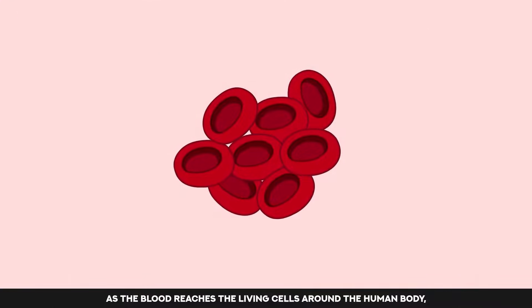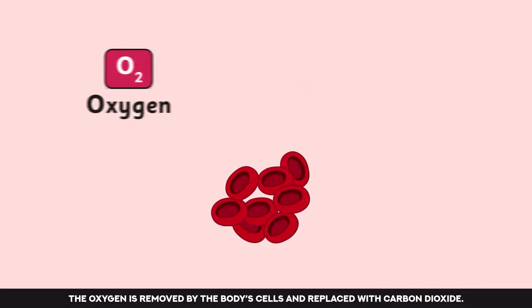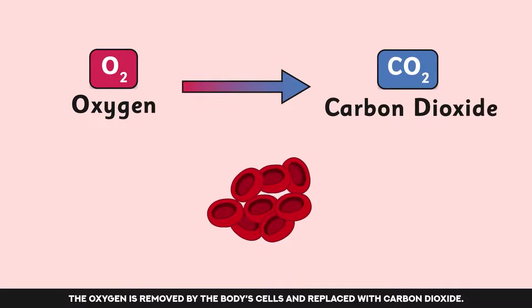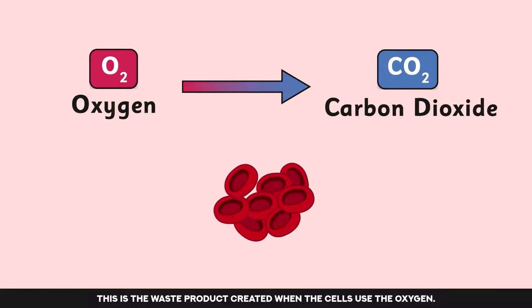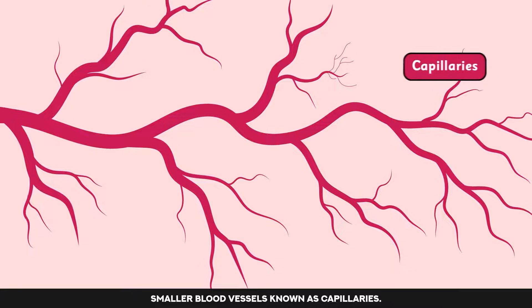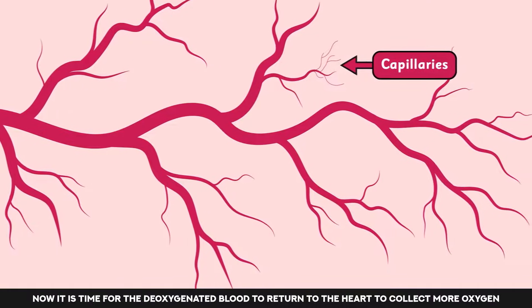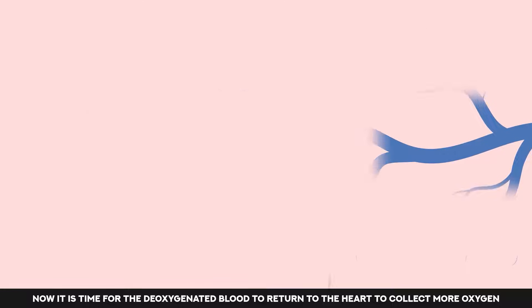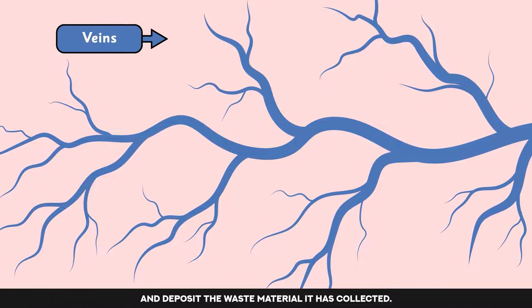As the blood reaches the living cells around the human body, the oxygen is removed by the body's cells and replaced with carbon dioxide. This is the waste product created when the cells use the oxygen. The blood can reach every living cell by travelling through a network of much smaller blood vessels, known as capillaries. Now it is time for the deoxygenated blood to return to the heart to collect more oxygen and deposit the waste material it has collected.